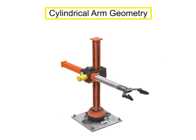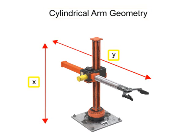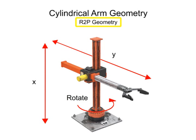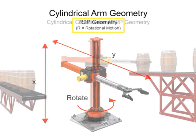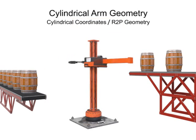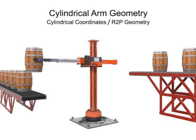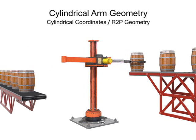Cylindrical arm geometry robots move linearly in two directions and rotate in one other. Since this type of robotic arm moves in two separate prismatic or linear directions and rotates in one direction, it's given the designation of R2P, where the R stands for rotational. This type of robotic arm is most often used in machine-tending, assembly, material handling, and palletizing operations.